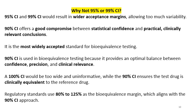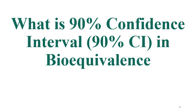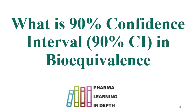90% CI is used in bioequivalence testing because it provides an optimal balance between confidence, precision, and clinical relevance. A 100% CI would be too wide and uninformative, while 90% CI ensures the test drug is clinically relevant to the reference drug. Regulatory standards use the 80–125% criteria as the bioequivalence margin, which aligns with the 90% CI approach.